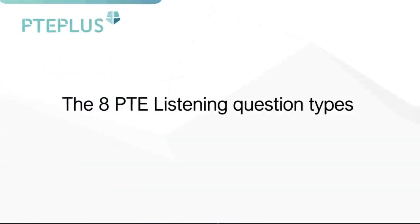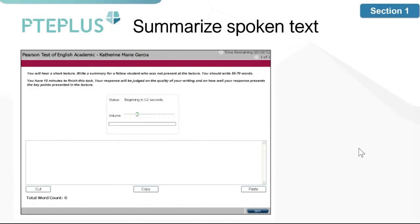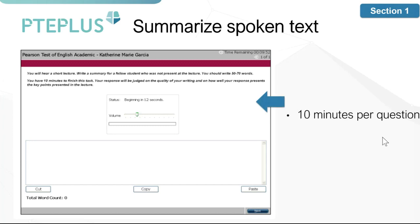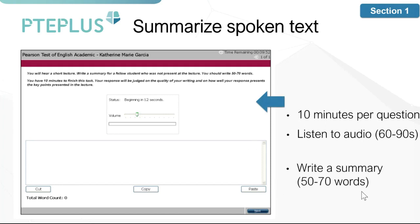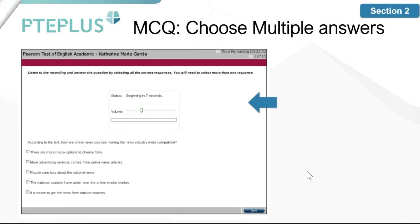The first question type is summarize spoken text, which is in section one. Each of these questions is timed individually, giving you 10 minutes per question. In that time, you'll listen to a short lecture of about 60 to 90 seconds, then write a summary of between 50 to 70 words of what you heard. You'll need to complete around two to three of these questions in the exam.